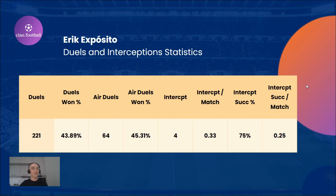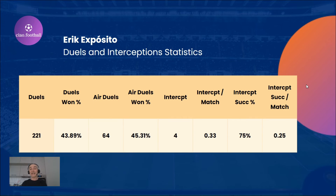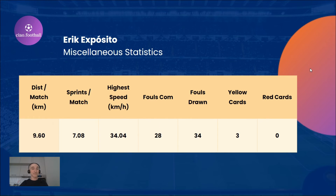Now let's jump to the duels and interception statistics, which you can see on your screen. His duels and aerial duels win share is close to 44–45% for both, and he makes on average 0.25 successful interceptions per match.